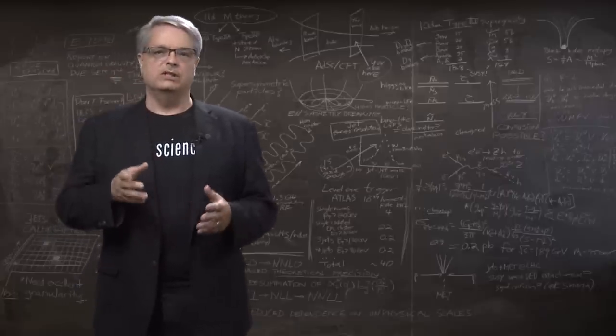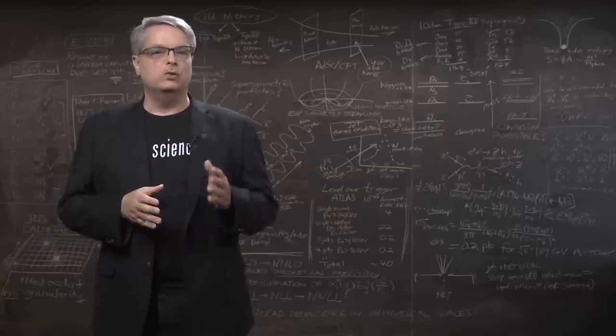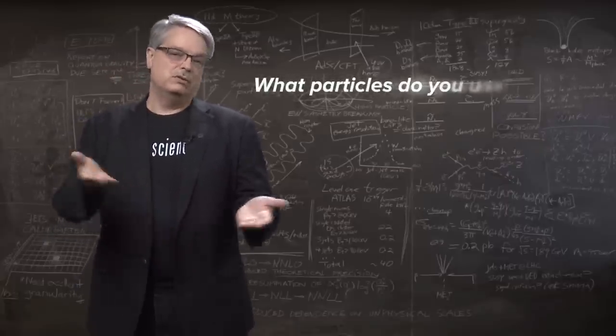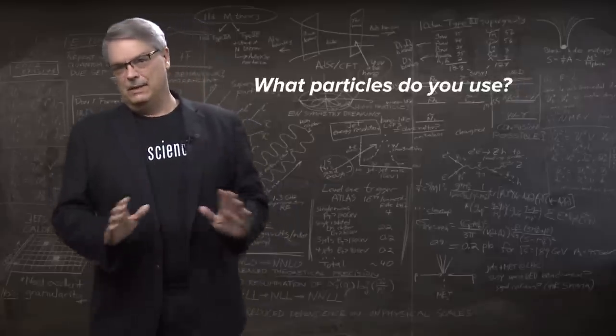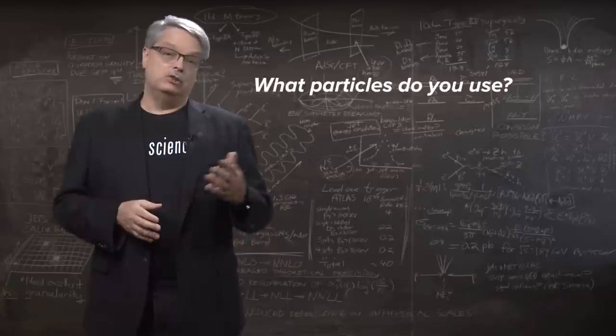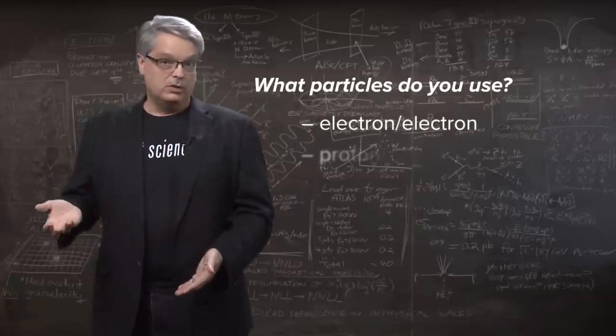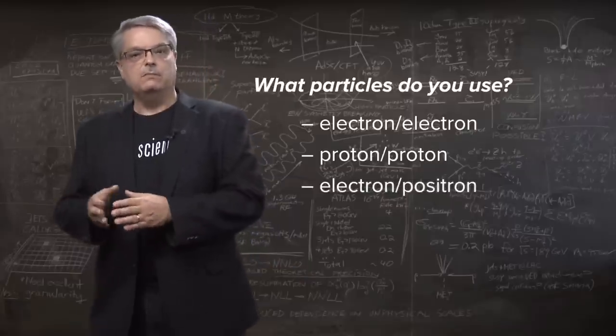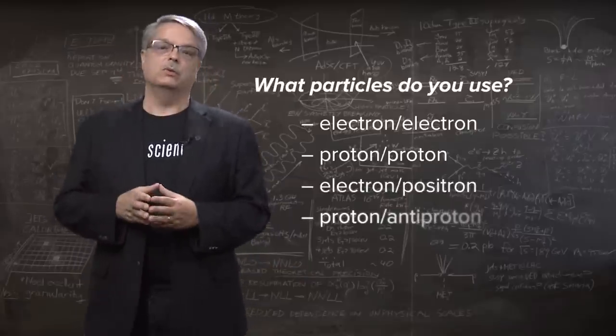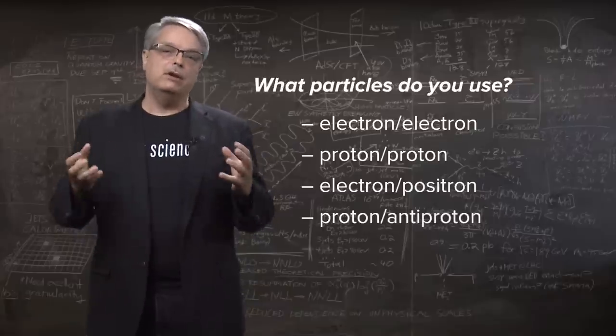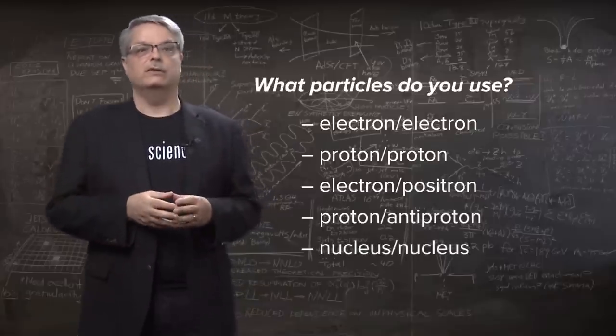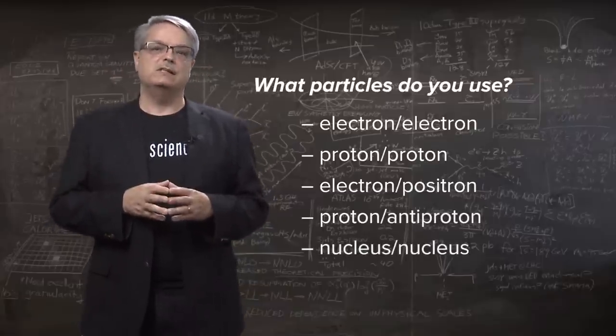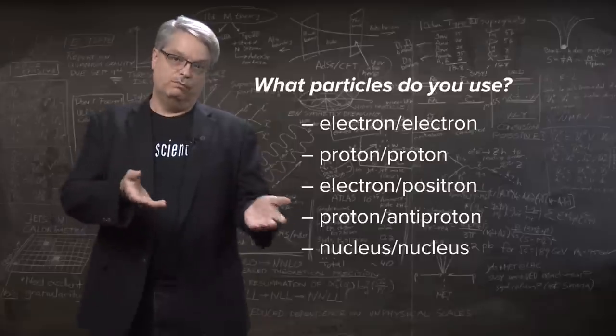But another question is, even if you've decided that you want to collide beams together, what particles do you use to make your beams? There are many options. You could collide two beams of electrons, or two beams of protons. You could collide an electron beam with an antimatter electron beam, or a proton with an antiproton one. You could even collide bare nuclei of atoms together. Each of these choices make sense, depending on what questions you want to answer.